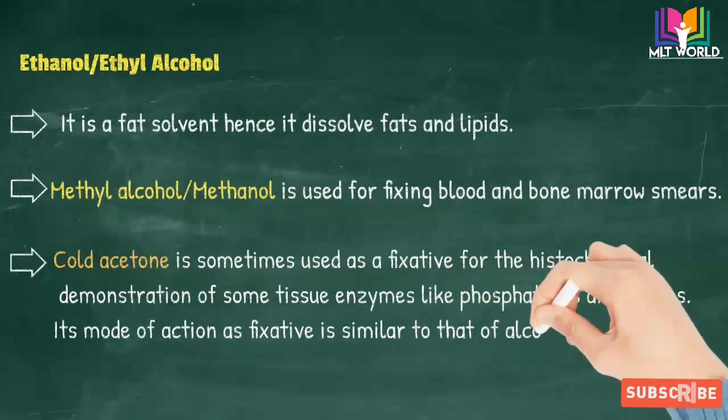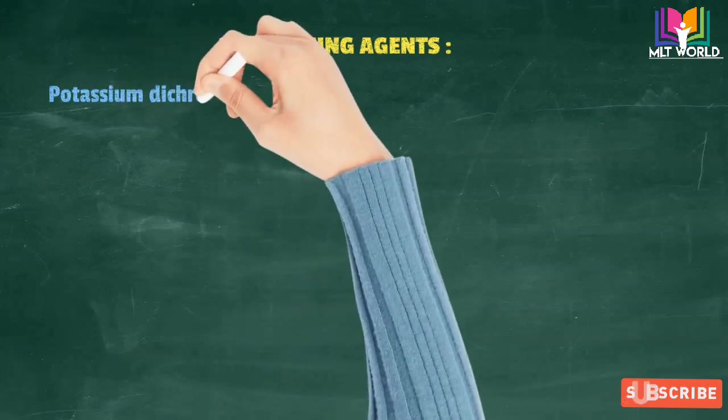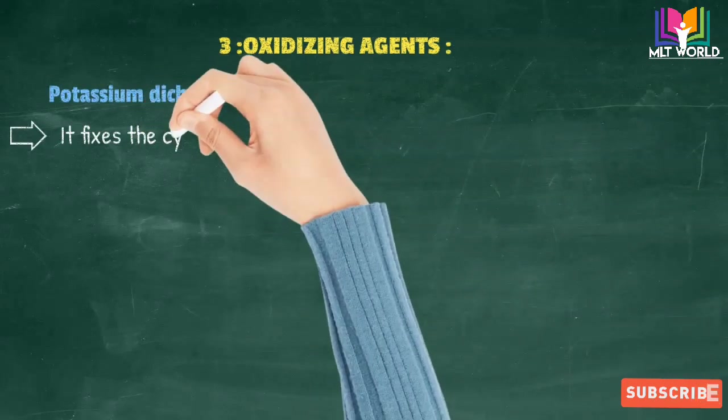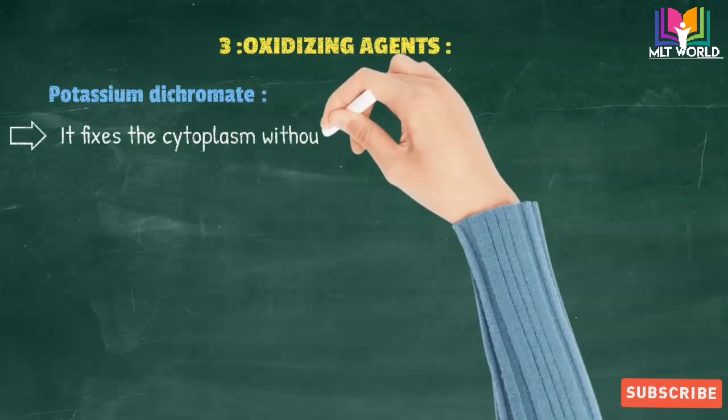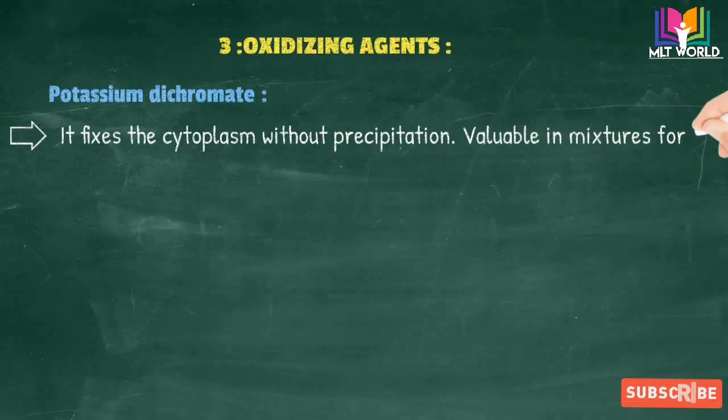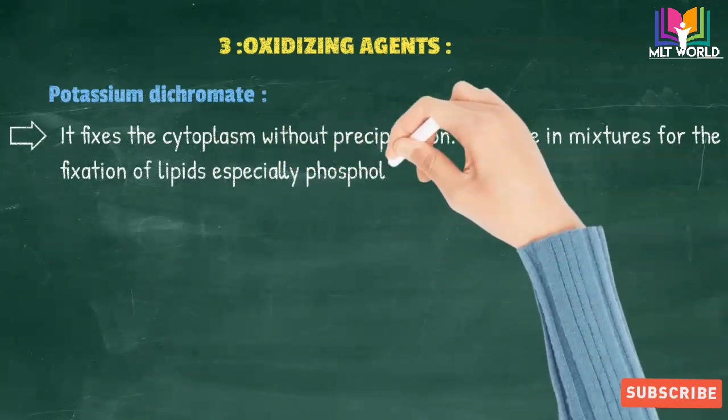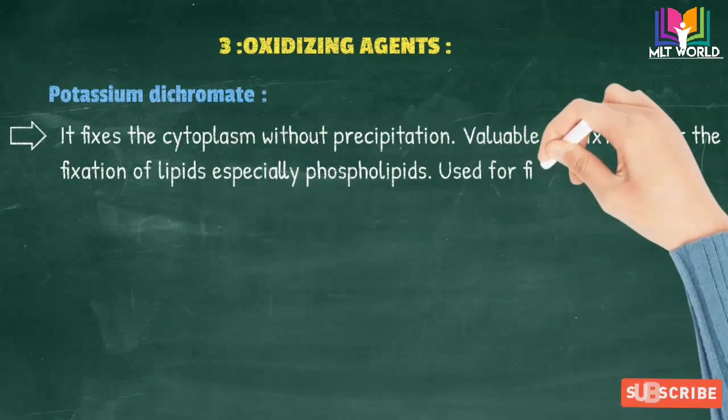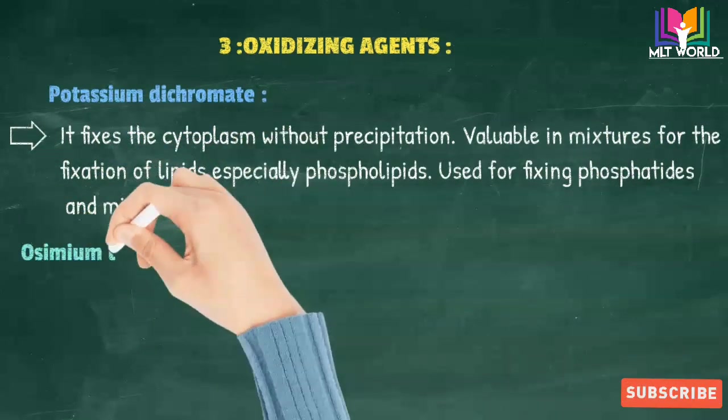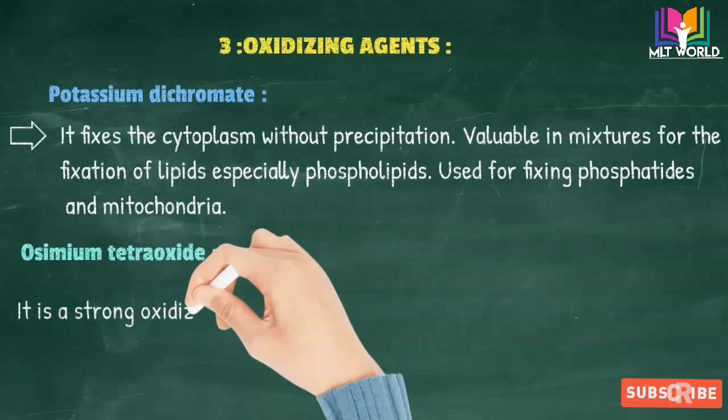Next group is oxidizing agents. In oxidizing agents, the fixative used is potassium dichromate. It fixes the cytoplasm without precipitation, valuable in mixtures for the fixation of lipids, especially phospholipids, and is used for fixing phosphatides and mitochondria.